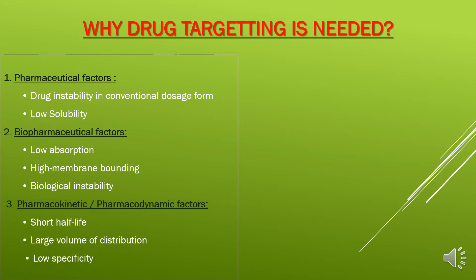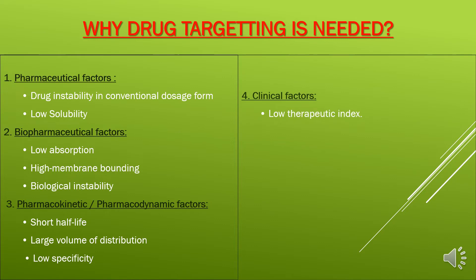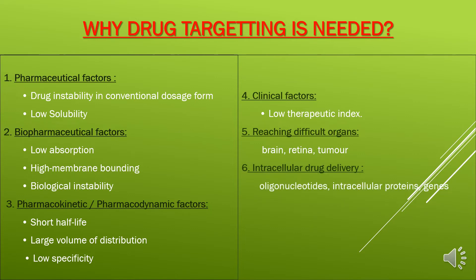Third, pharmacokinetic or pharmacodynamic factors: short half-life, large volume of distribution, and low specificity. Fourth, clinical factors: low therapeutic index. Fifth, reaching difficult organs like the brain, retina, and tumor. Sixth, intracellular drug delivery — such as oligonucleotides, intracellular proteins, and genes.